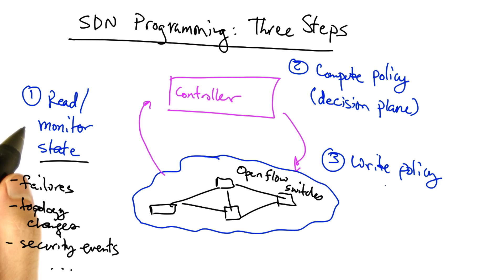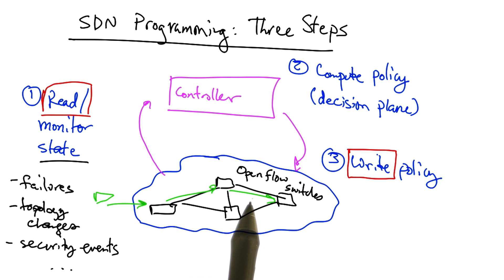Consistency problems can arise in two steps. First, the controller may read state from the network switches at different times, resulting in an inconsistent view of the network wide state. And second, the controller may be writing policy as traffic is actively flowing through the network, which can disrupt packets along an end-to-end path, or packets that should be treated consistently because they are part of the same flow.